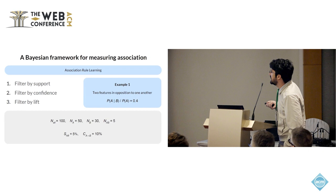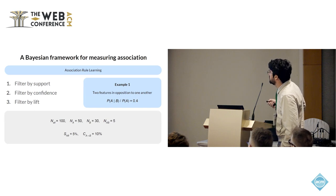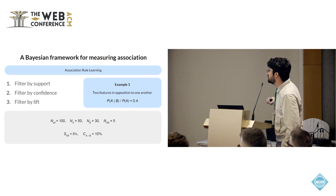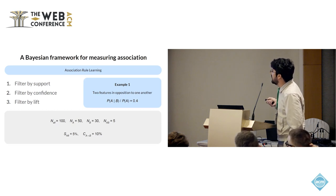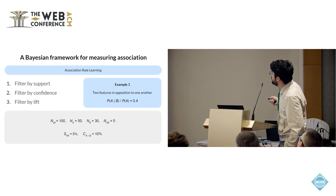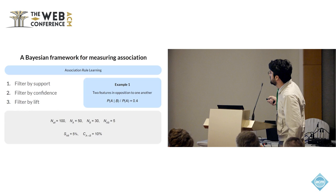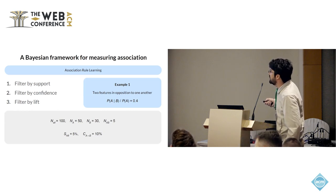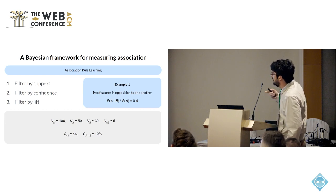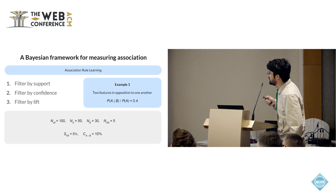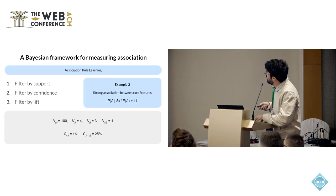There are a few examples of how association rule learning can fail to identify certain relations. The first few failures happen at the support filtering step, because you are dealing with things that don't appear together enough times. For instance, if two features are in opposition with each other, then of course you won't find them happening together often, and you just discard that case.